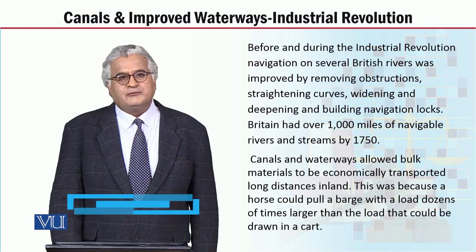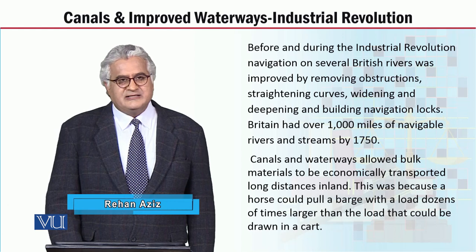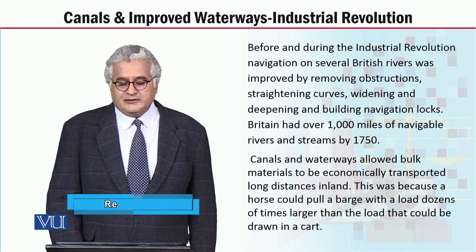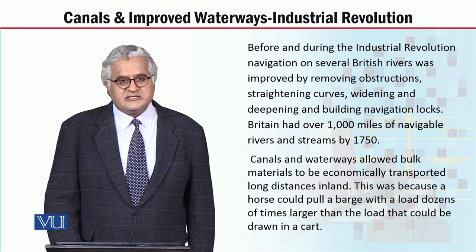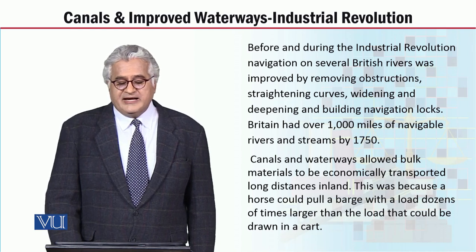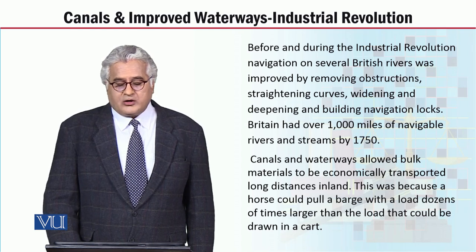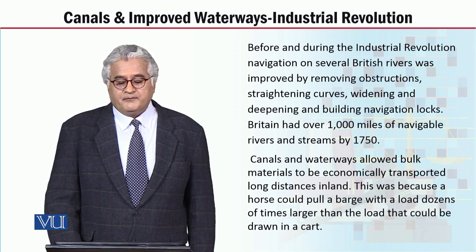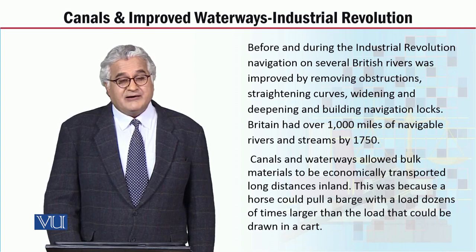We have to learn about the canals. Before and during the Industrial Revolution, navigation on several British rivers was improved by removing obstructions, strengthening curves, widening and deepening, and building navigation locks. Britain had over 1,000 miles of navigable rivers and streams by 1750.